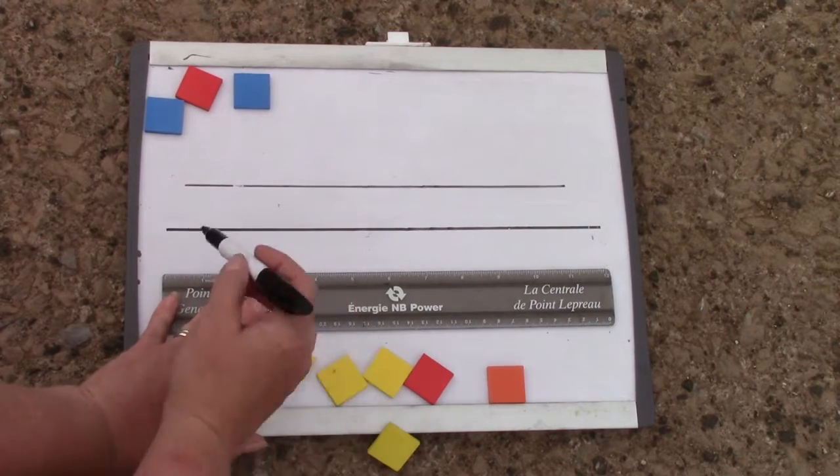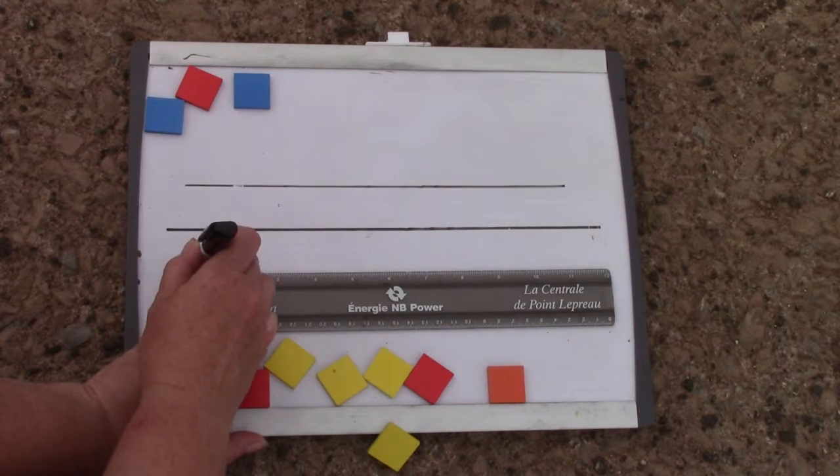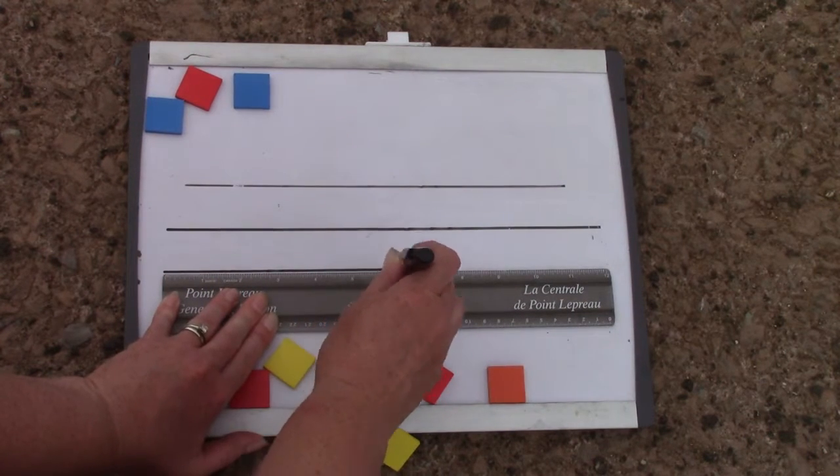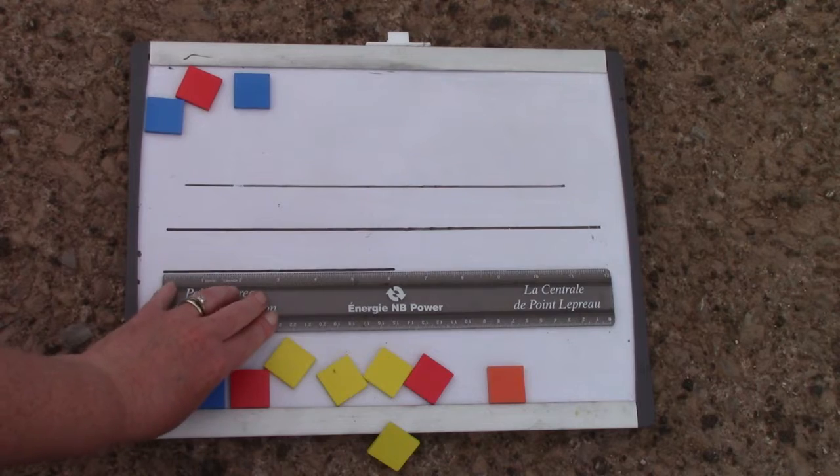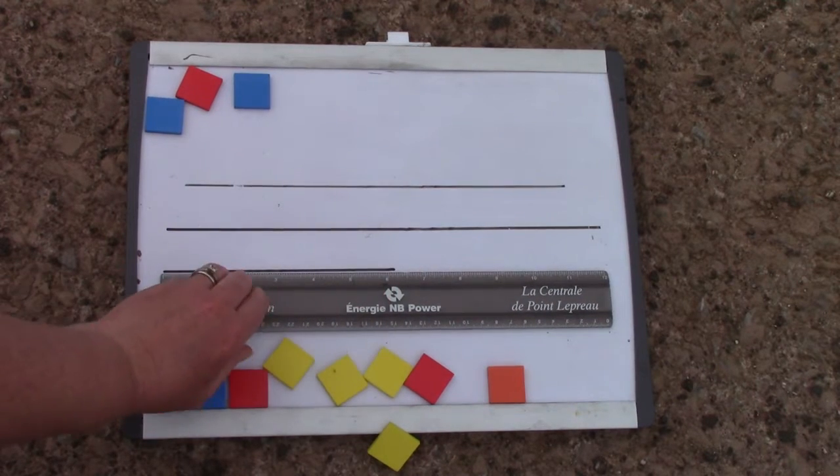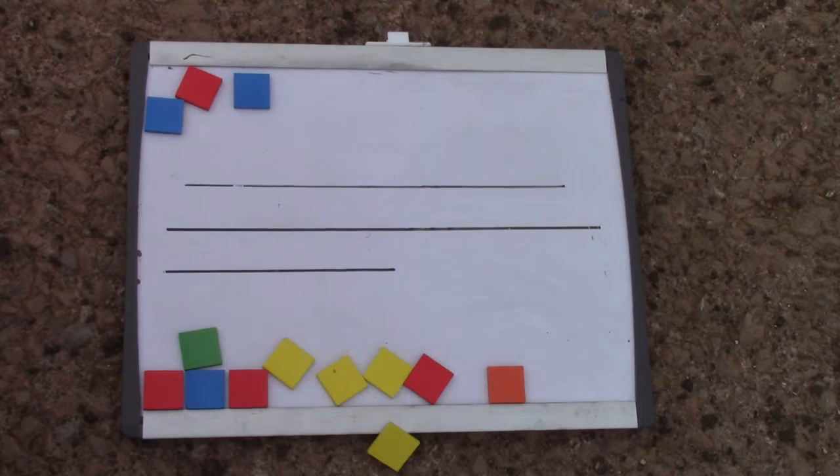And then I am also going to make a line that is half as long as my ruler. It starts at zero and ends at six.